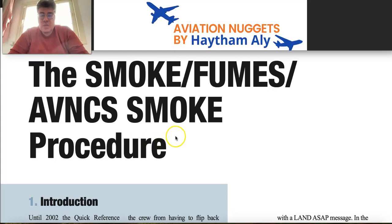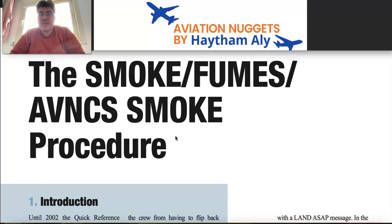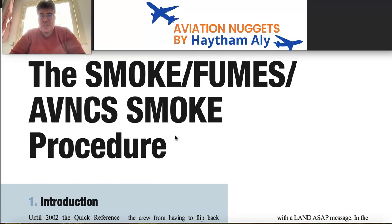If you need to memorize the procedure for engine fire or EBU fire, remember: isolations and fire extinguish. But if you need to remember the procedure for avionics smoke, remember: ventilation then electrical shedding. You need to ventilate the smoke inside the avionics compartment, and if smoke still persists, do electrical shedding — take the aircraft into an emergency electrical situation.